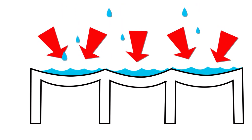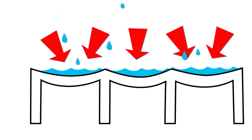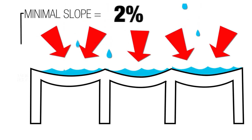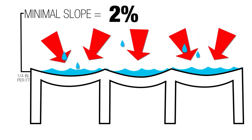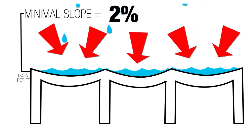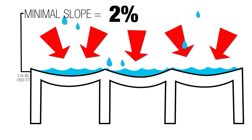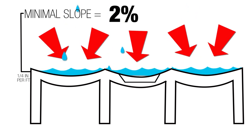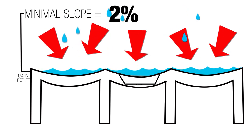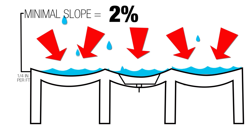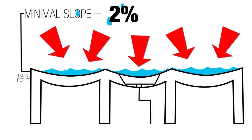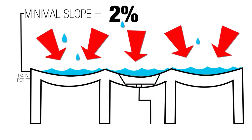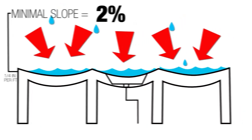The code only allows roofs that are sloped at least 2%, which is one quarter inch per foot. If you've accounted for the possibility of ponding by over-structuring it with intentional ponding, you're allowed to have a flatter roof. But generally, our minimum slope is 2%.